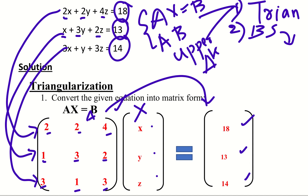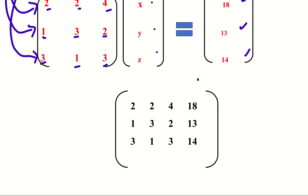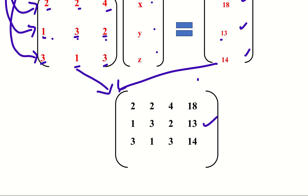Then we have the matrix formula. I will augment A and B — I will merge them together. The augmented matrix is: row 1: 2, 2, 4, 18; row 2: 1, 3, 2, 13; row 3: 3, 1, 3, 14.